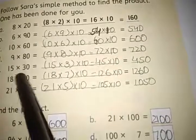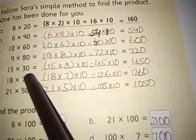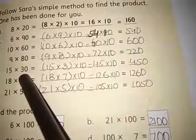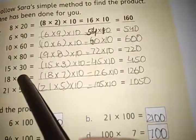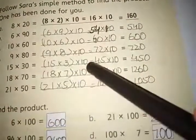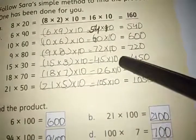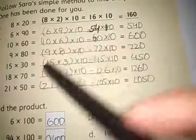15 multiplied by 30. First 15 multiplied by 3 because 3 is on 10th place. 15 threes are 45, and then 45 multiplied by 10 is equal to 450.